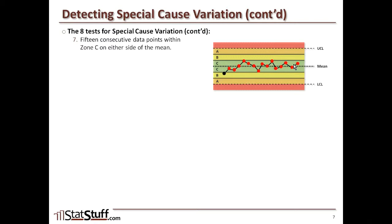Across 15 consecutive data points, we'd expect to see something falling in zones B or A at some point — beyond one standard deviation of the mean. If we're not seeing that, there might be something going on, some sort of special cause to explore further, though it's not a hard and fast rule.